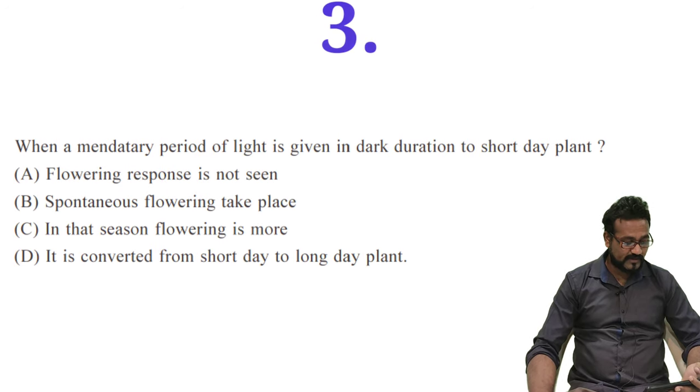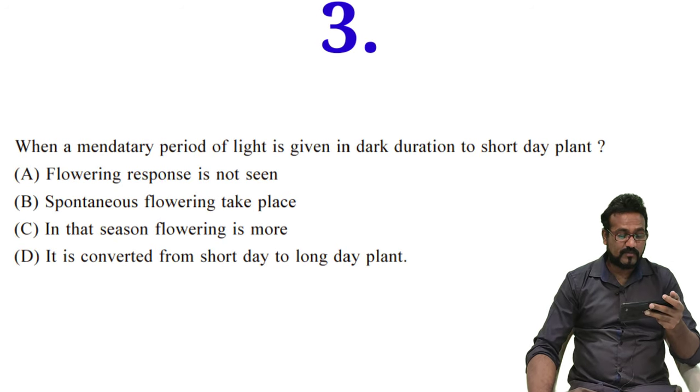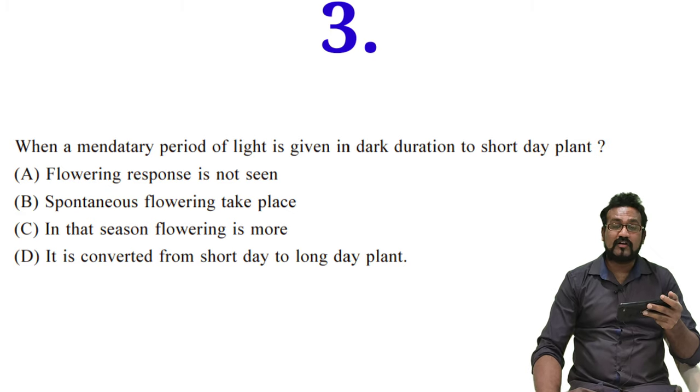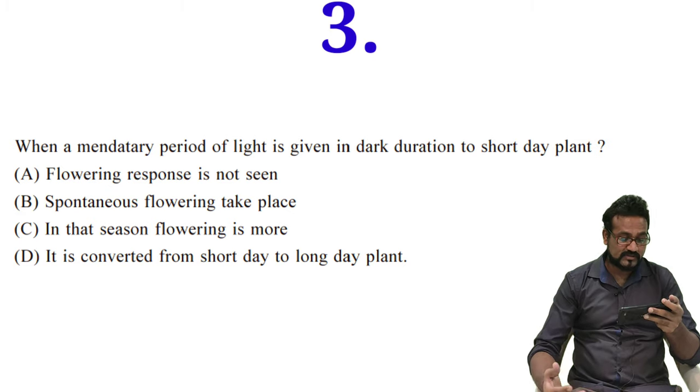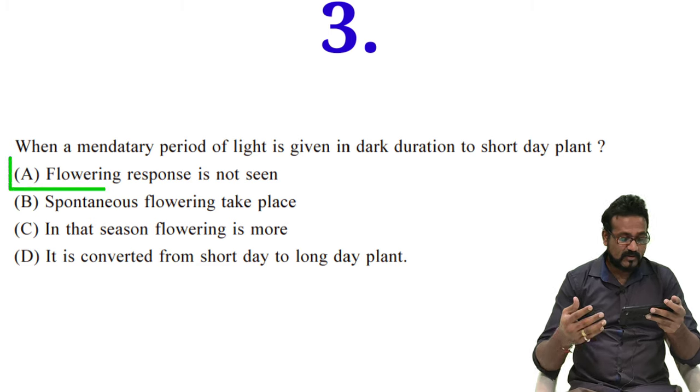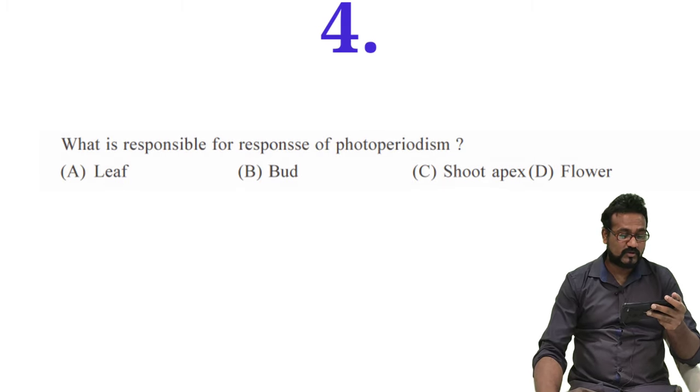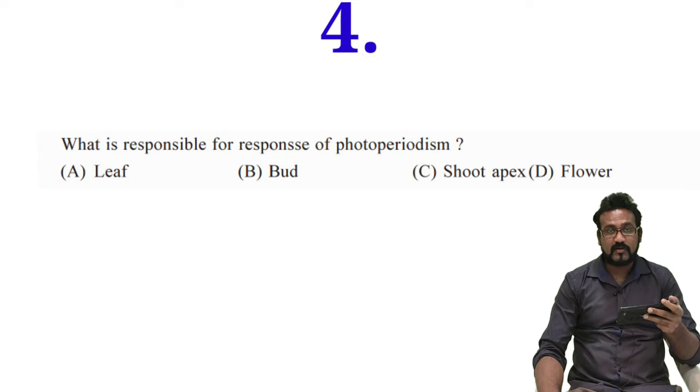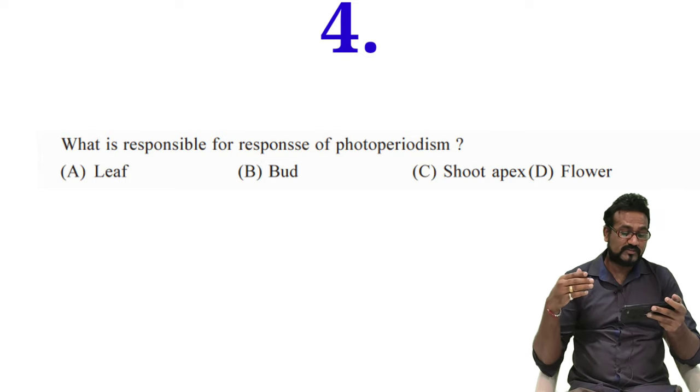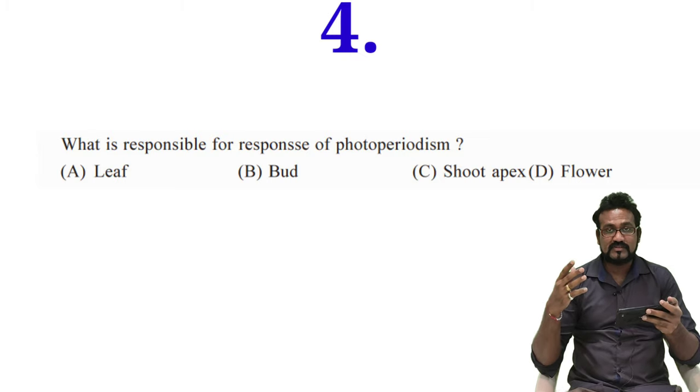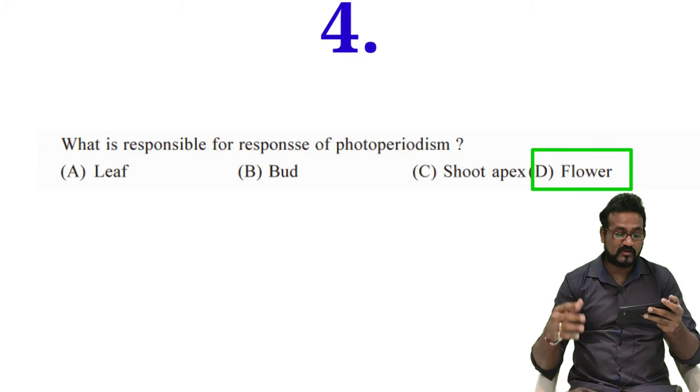Third question is when mandatory period of light is given in dark duration to short day plant, what will happen? Flowering response is not seen. The first option was right. Fourth question is what is responsible for response of photoperiodism? Leaf, bud, shoot apex, or flower. What will give response to photoperiodism? Obviously flowering is the response for photoperiodism.